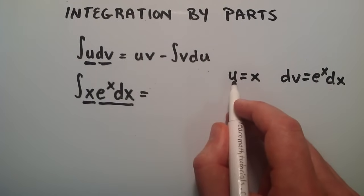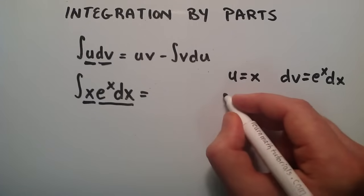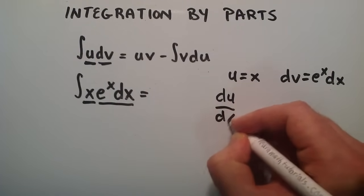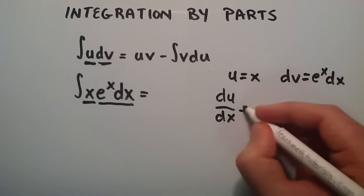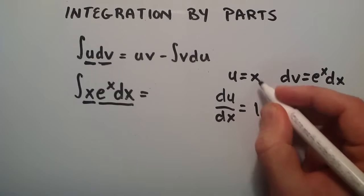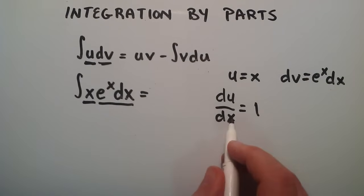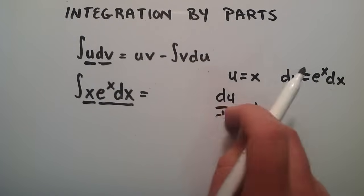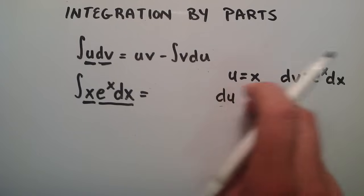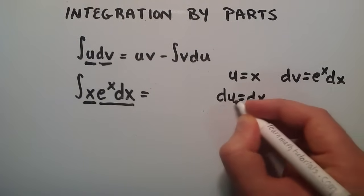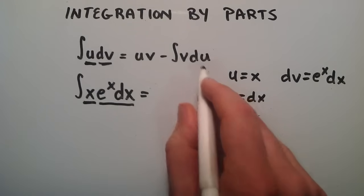We can figure out what du is by taking the derivative of u with respect to x. The derivative of u with respect to x is simply just 1 since the derivative of x with respect to x is 1. If we multiply both sides by dx, this becomes du is equal to dx. So we've defined what du is now.